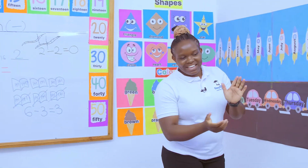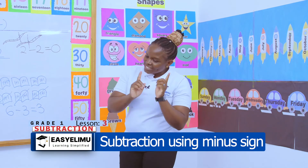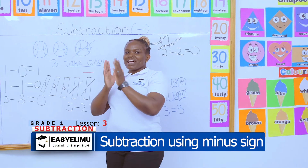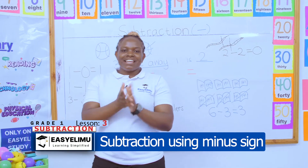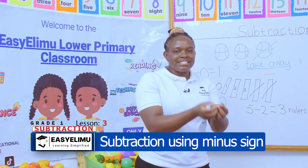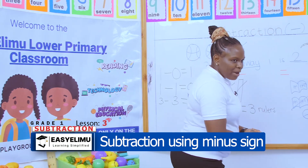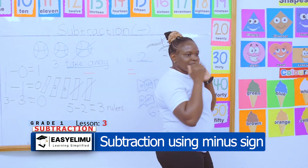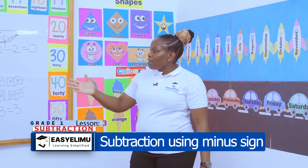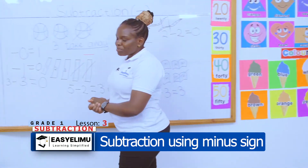Oscar says: 'Any number take away a zero is that number.' Repeat class: any number take away a zero is that number. And any number take away itself is zero. When a number takes away itself — it is four, then it takes away the whole four — you are remaining with zero. Class, is there a problem up to there?